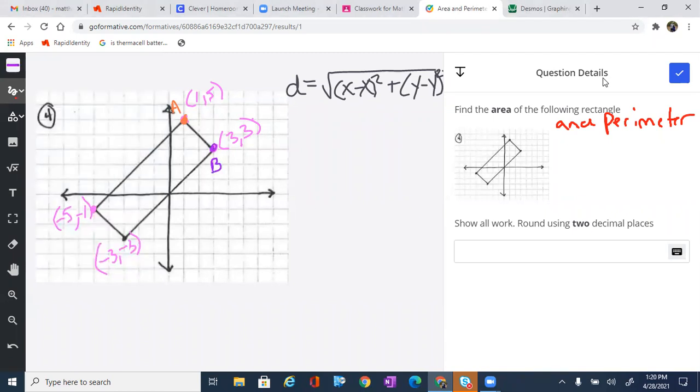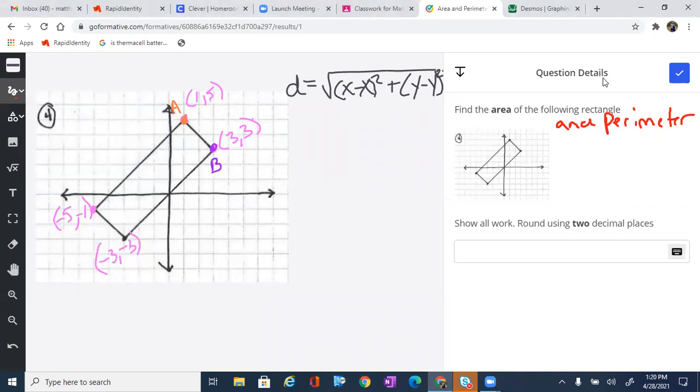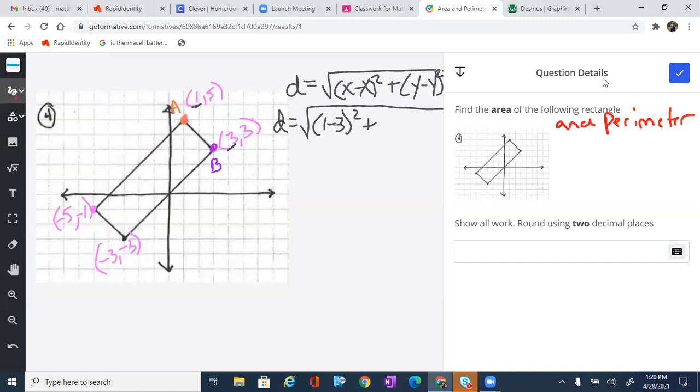We're going to follow the distance formula. What I'm going to do is subtract the x's, then subtract the y's. So the distance equals the square root, and I'm going to subtract the x's. So 1 minus 3 squared plus, and then I'm going to subtract the y's, which are going to be 5 minus 3 squared.